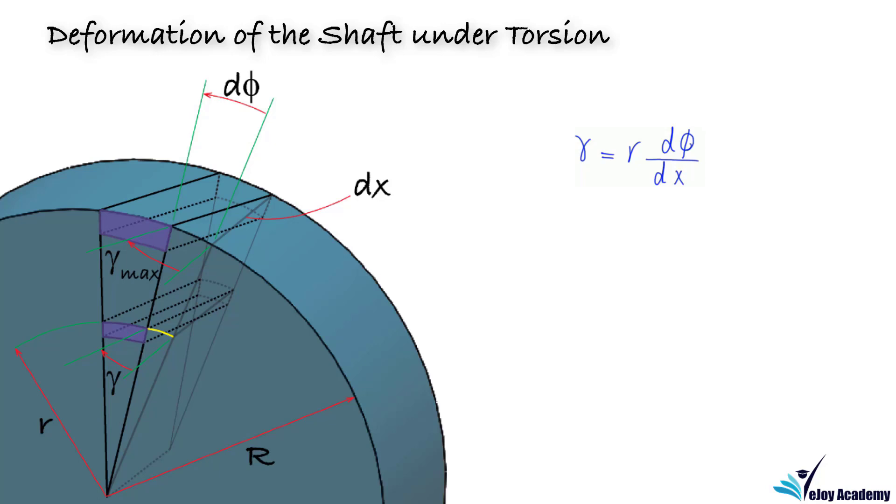From this equation, we can write d phi over dx equals gamma over r equals gamma max over r capital. Therefore, we obtain gamma is equal to r over r capital times gamma max.